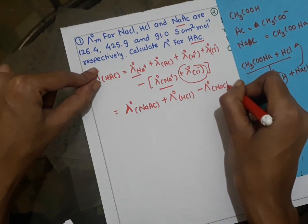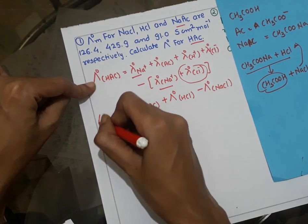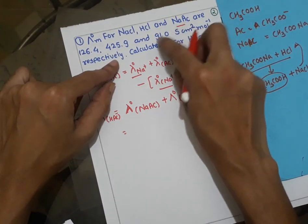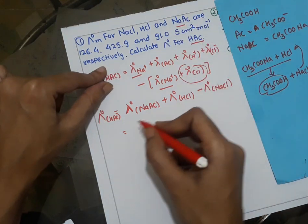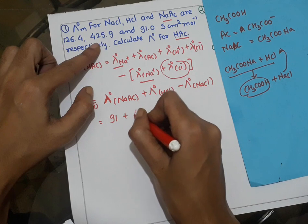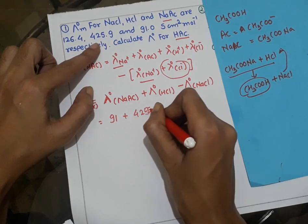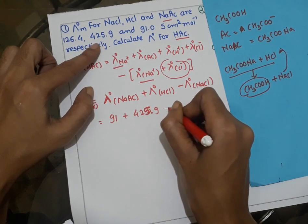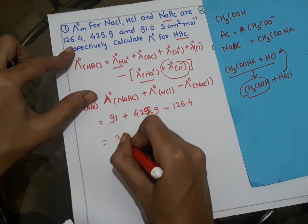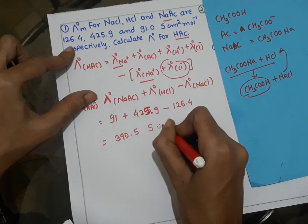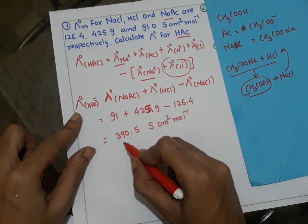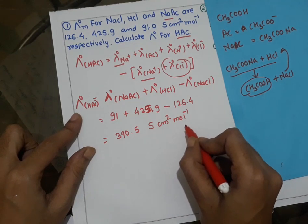Therefore the formula becomes: lambda naught of NaAc plus lambda naught of HCl minus lambda naught of NaCl equals the limiting molar conductivity of HAc. Putting in the values: 91.0 plus 425.9 minus 126.4 equals 390.5 Siemens centimeter square per mole inverse. So the limiting molar conductivity of acetic acid is 390.5 Siemens centimeter square per mole inverse.